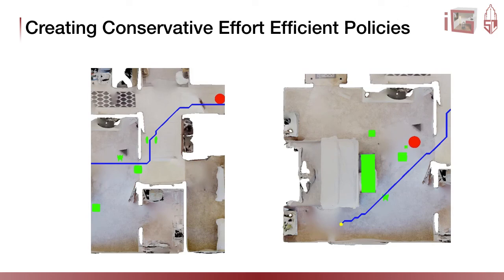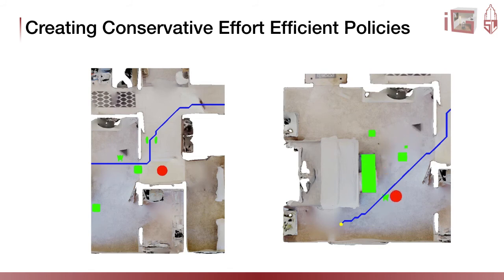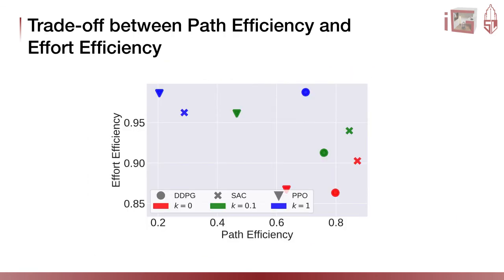On the other hand, if we increase the interaction penalty, the behavior becomes more effort-efficient with fewer interactions, but the robot also follows less optimal navigation paths. On the left, the robot is blocked by a small object at the door and fails to push it and reach the target location. On the right, the robot takes a detour to avoid small objects. These diverse behaviors can be generated and studied because our new environment allows the agent to interact with the environment and change its state while achieving navigation.